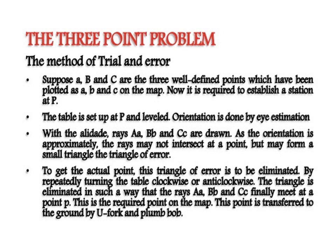In the trial and error method of the three-point problem, A, B, and C are three well-defined points plotted as a, b, c on the map. The table is set up at P, leveled, and orientation is done by eye estimation. With the alidade, rays AA, BB, and CC are drawn. Since orientation is approximate, the rays may not intersect at a point but may form a small triangle called the triangle of error. To get the actual point, this triangle of error is eliminated by repeatedly turning the table clockwise or anti-clockwise until rays AA, BB, and CC finally meet at point P. This is the required point on the map, and is transferred to the ground by U-fork and plumb bob.